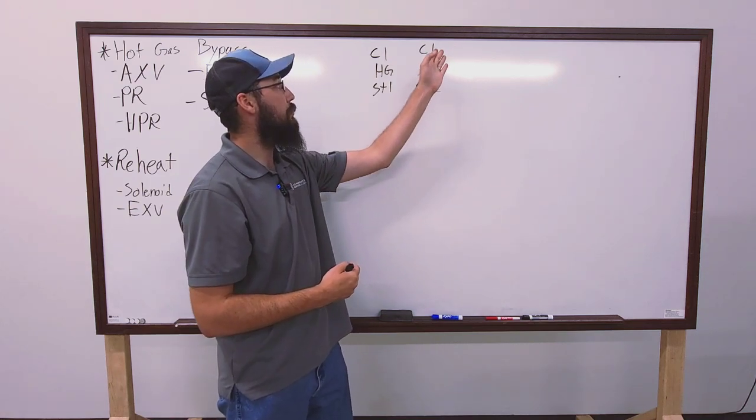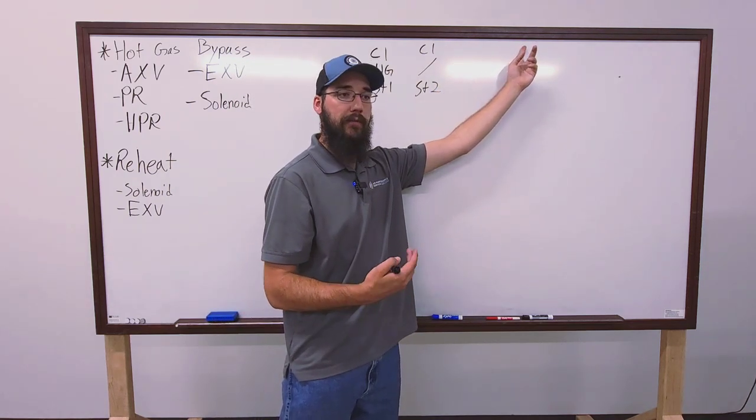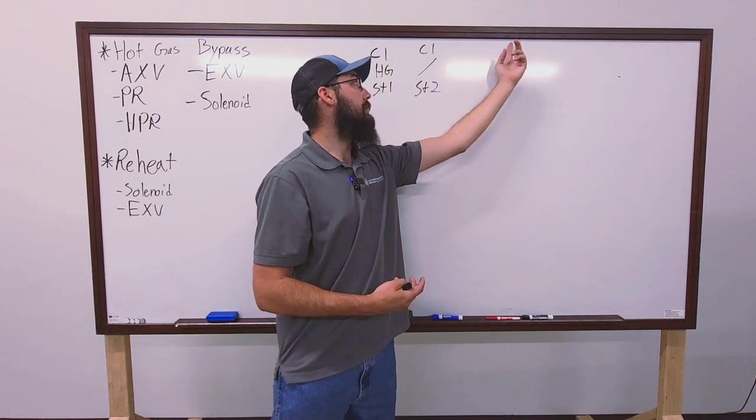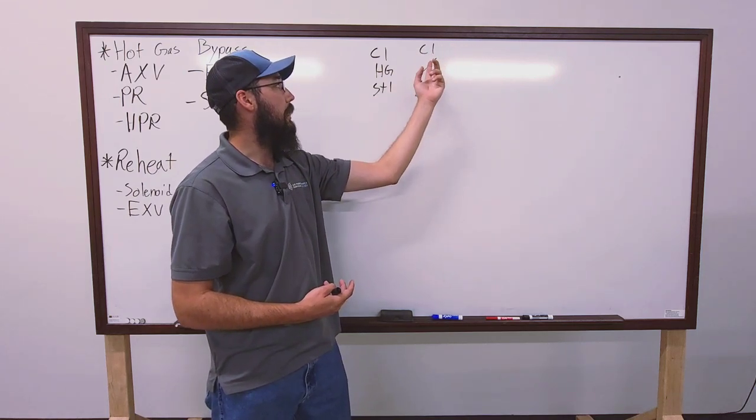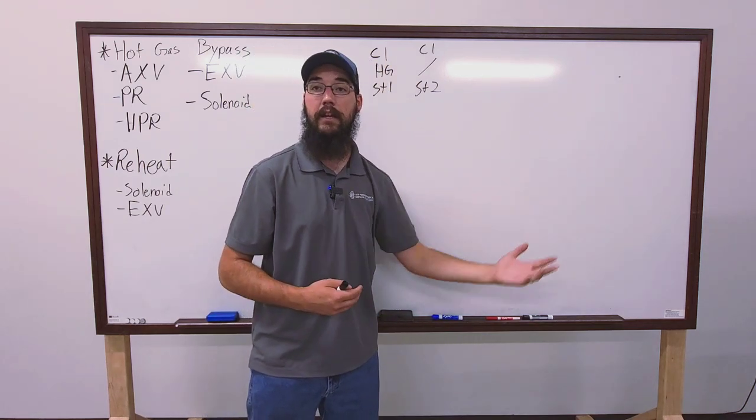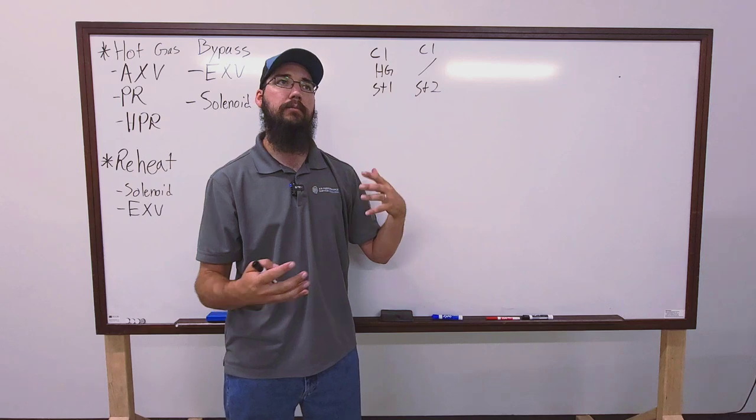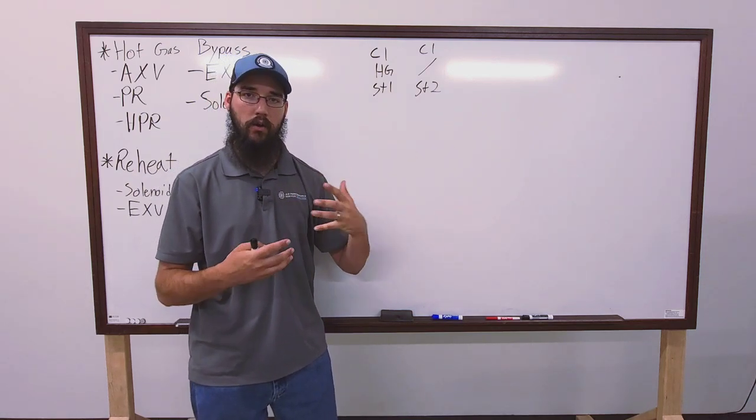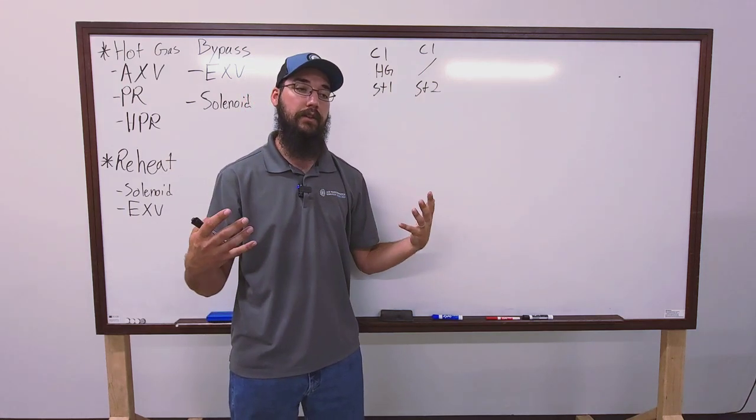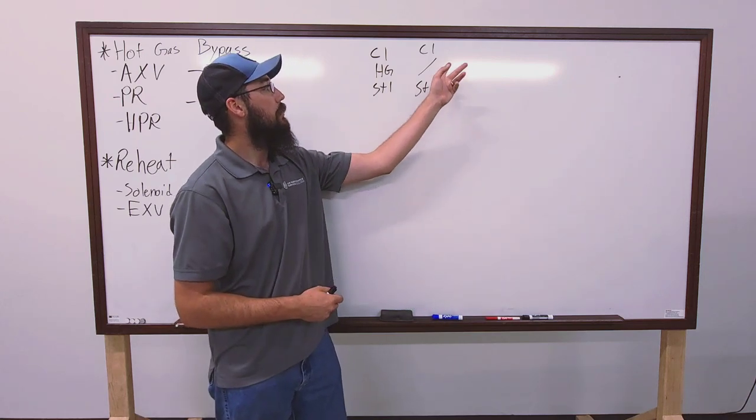So we're trying to produce a 55 degree discharge air on this system. That's our set point. As we're rolling through, we know that if we stage down far enough, so let's say we needed stage four in this particular case would be three compressors. So we are staging down and we get to stage two and it's just running one compressor and we're still satisfying. Now this may be something this time of year, late in the evening, say after things are cooling off quite a bit.